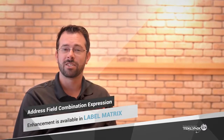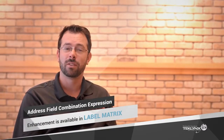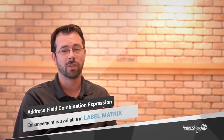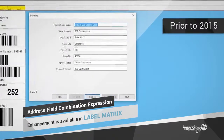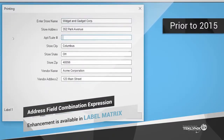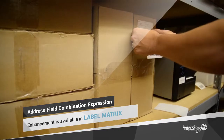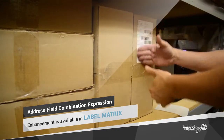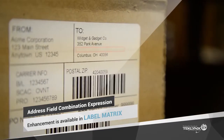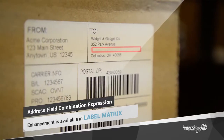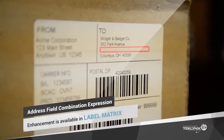Sometimes address information has extra lines, sometimes it doesn't. That's why we developed the address field combination expression in Label Matrix. Before, address information that did not contain a second or third line would translate into a blank space on the label. Users had to create a complex expression to get rid of that space, resulting in unnecessary effort.